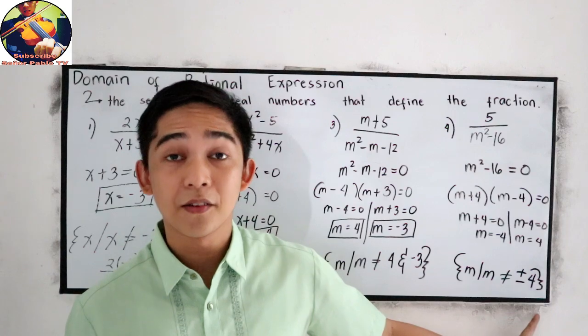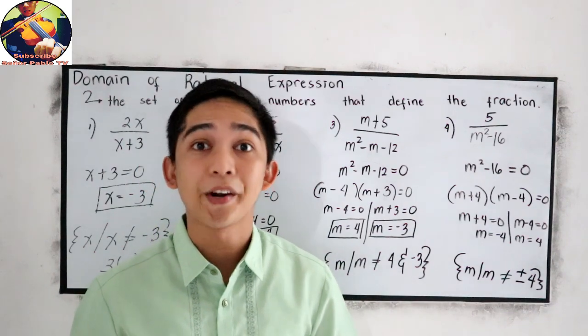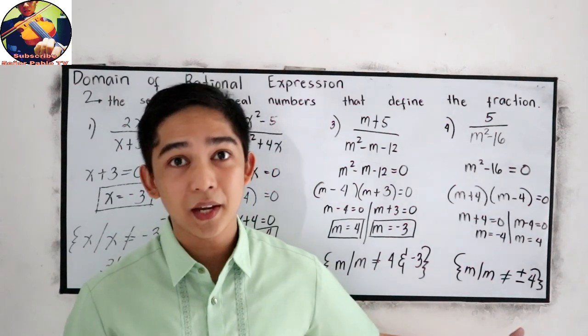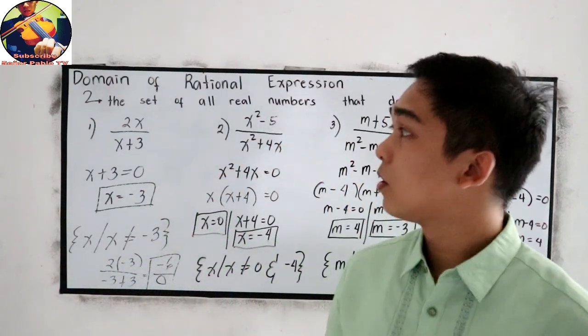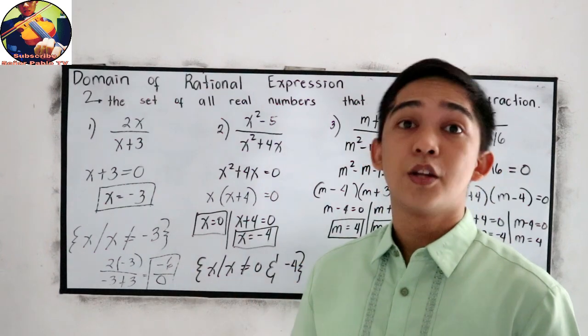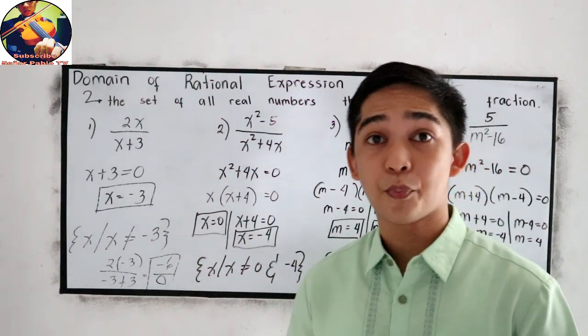Because if our m is positive or negative 4, that will make our expression undefined. So that is how to find the domain of rational expressions.